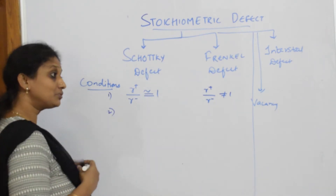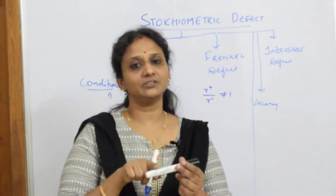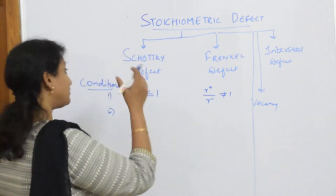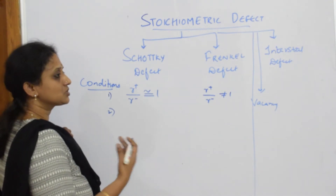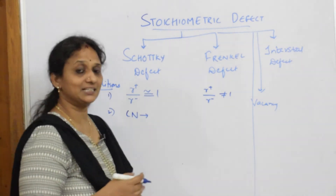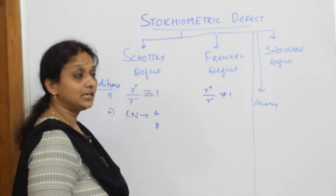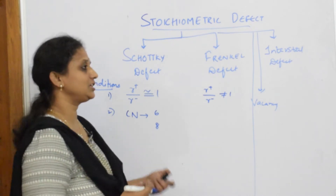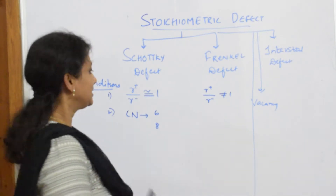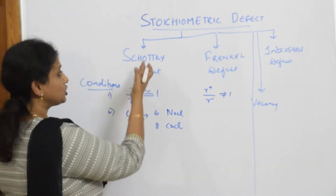There is one more condition called coordination number. The coordination number is the number of nearest neighbors — how many atoms are touching a particular atom. For crystalline solids, if the coordination number is six or eight, such as NaCl with coordination number six and cesium chloride with coordination number eight, such compounds show Schottky defect.